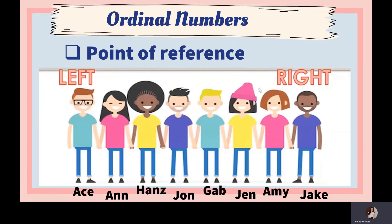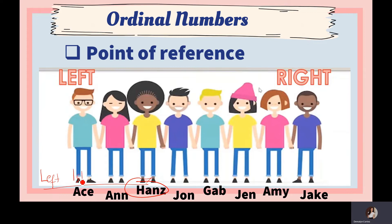Now let's proceed to the point of reference. This is one of the most important things in ordinal numbers when stating the position of a person or object. We need to know which side is left and which is right — just look at your hands. For this photo, let's look for the place of 'Hands' from the left. Counting from the left: Ace is first, second, and Hands' place is third.